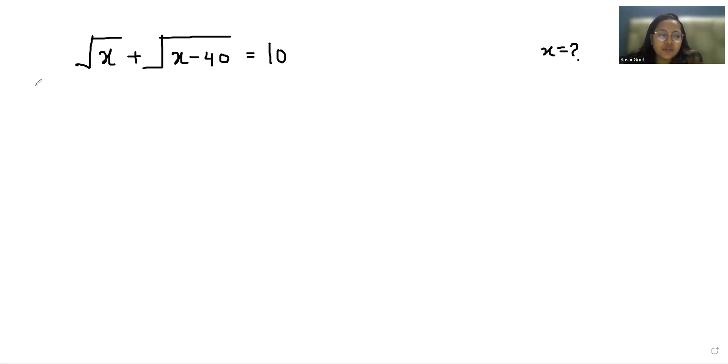Let's start with today's video solution. In the first step I am going to do squaring both sides. So on the left hand side it becomes an identity that is a plus b whole square: a square plus b square.